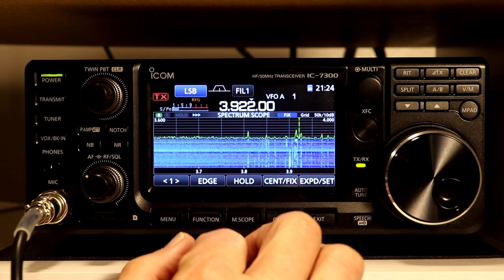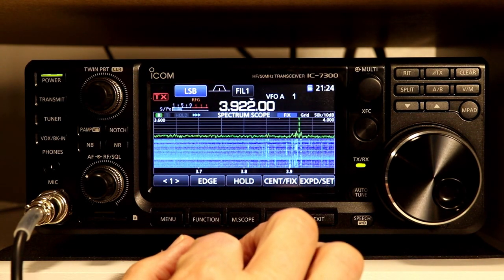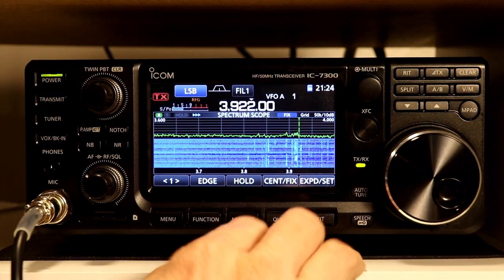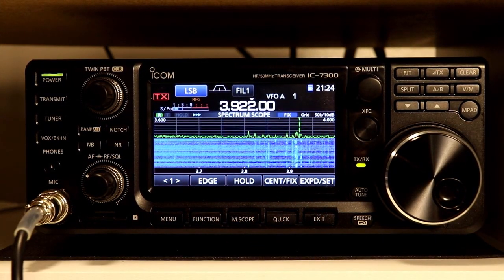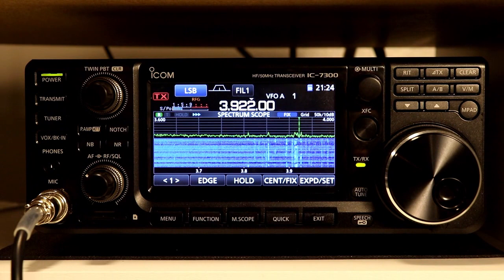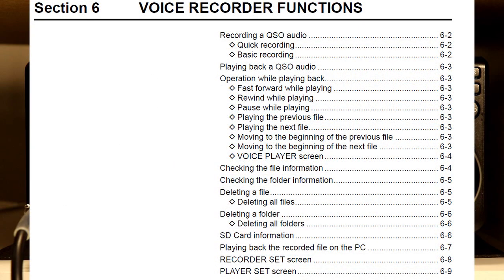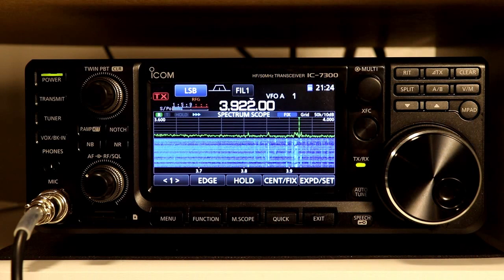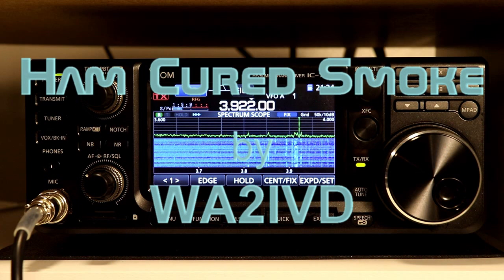That's about it for the fixed edges, and also just about it for the entire scope segment. We finally made it through the spectrum scope section. Sorry that we had to break that up into three separate videos, but there was a lot of material to cover. Next time we're going to take a look at section 6, the voice recorder functions — hopefully most or all of the way through it in a single video. As always, thanks for watching. If you're enjoying these videos, I'd appreciate it if you'd consider subscribing, and a thumbs up also helps. I'm Tom, WA2IVD, and this is Ham Cured Smoke.